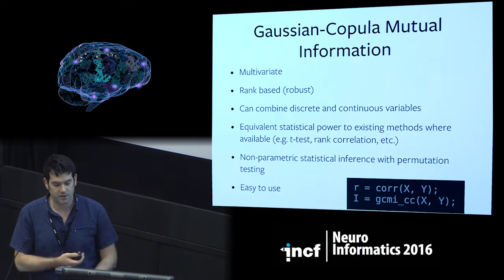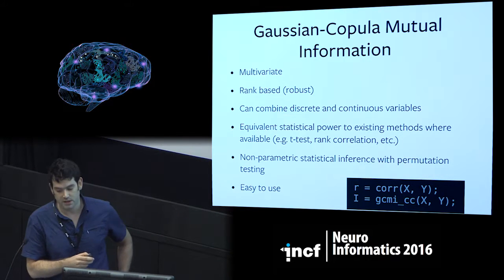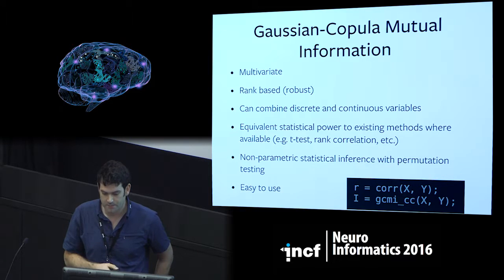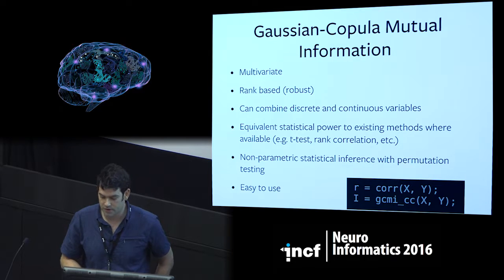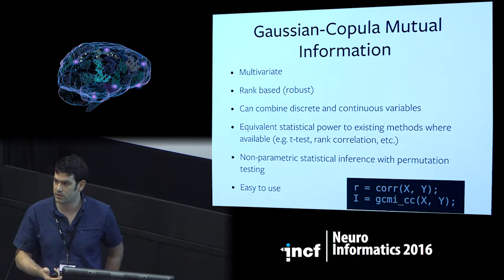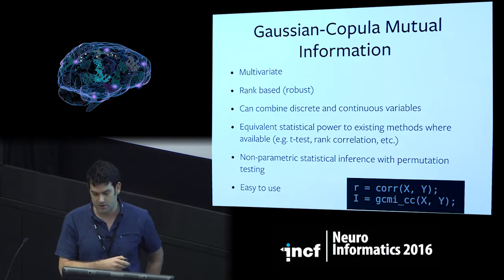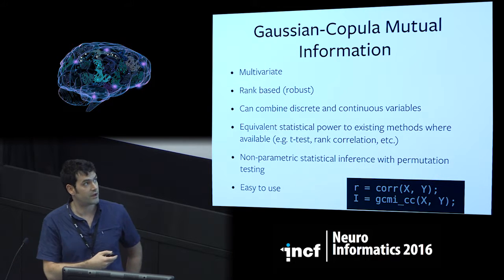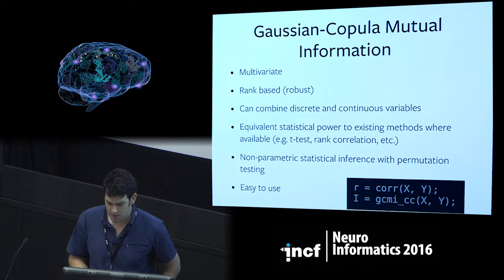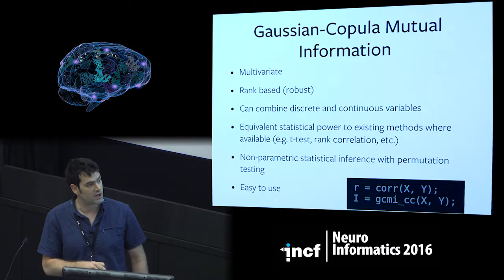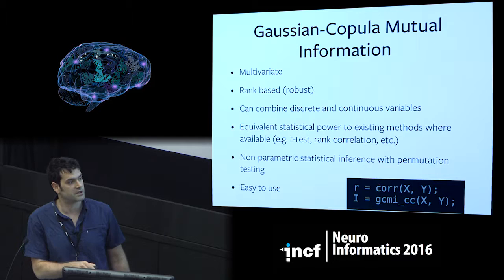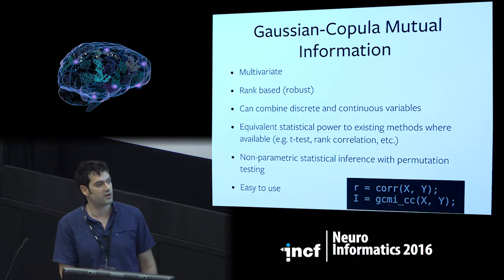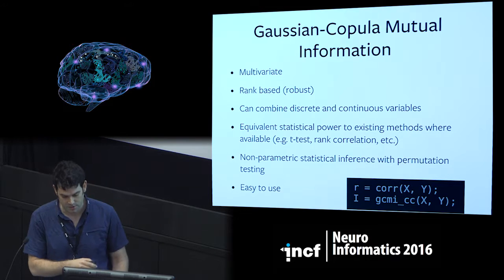What are the particular key properties or advantages of this estimator? They are particularly its multivariate performance, which I'm going to talk about. It's rank-based, so it's inherently robust and performs well on noisy neuroimaging data. Crucially, we can combine continuous and discrete variables within the same framework, so it unifies what would have been t-tests, chi-squared tests, and correlations, all with a common effect size. In the preprint, we show it has equivalent statistical power to existing methods where they're available in univariate cases. We do statistical inference with non-parametric permutation testing. And it's very easy to use — it's just a plug-in function that replaces correlation and calculates a bivariate function of two variables that gives you this effect size.